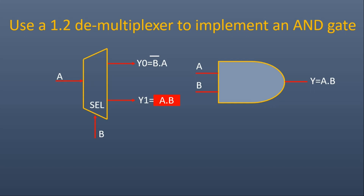Let us apply A at the input I and B at the select line. As we know it has two outputs y0 and y1. Y0 will be equal to B-bar multiplied by A, and y1 will be equal to A multiplied by B, which is nothing but the output of an AND gate. And this is how we implement an AND gate with the help of a 1×2 demultiplexer.